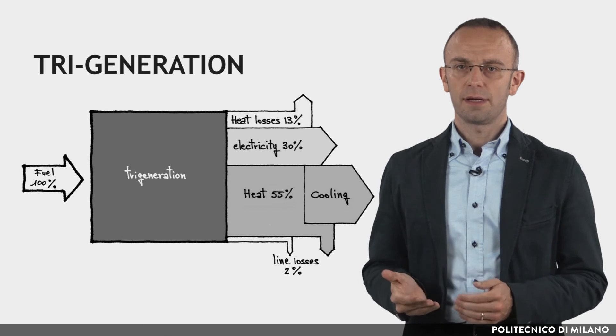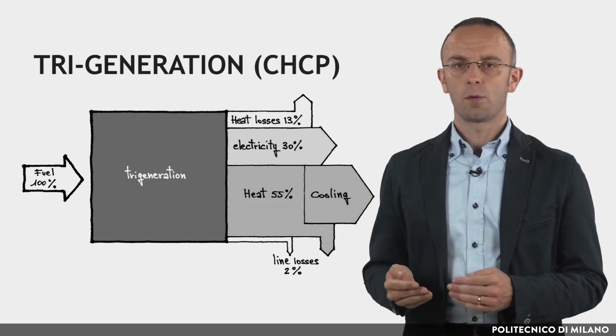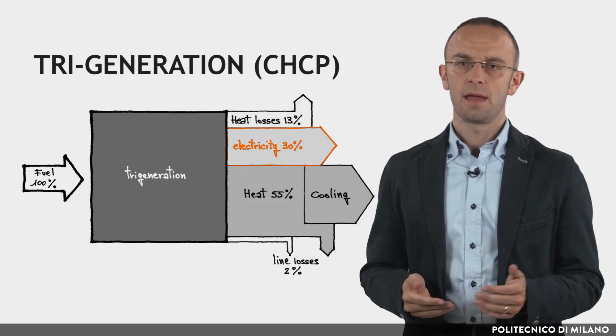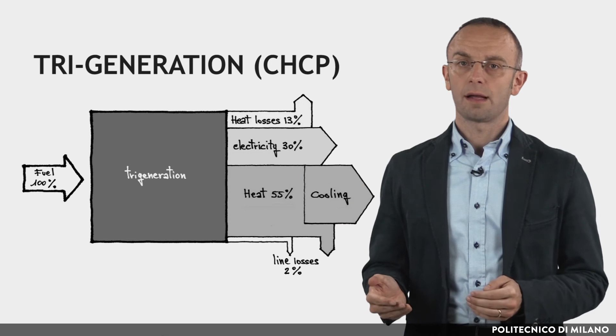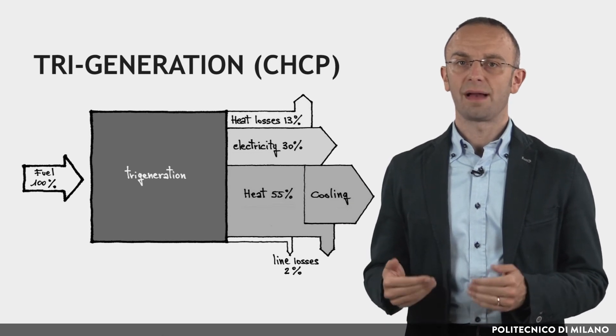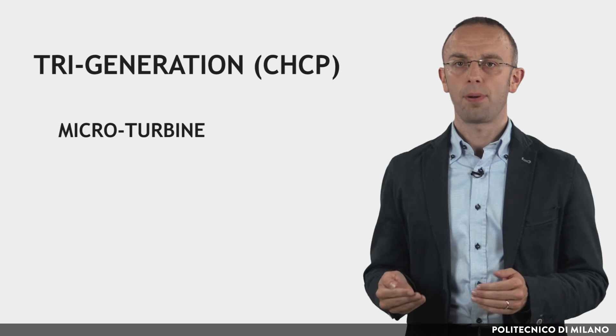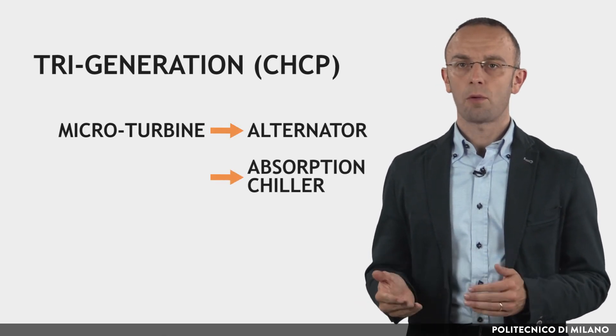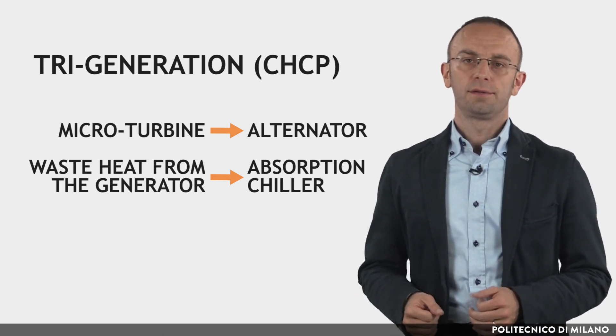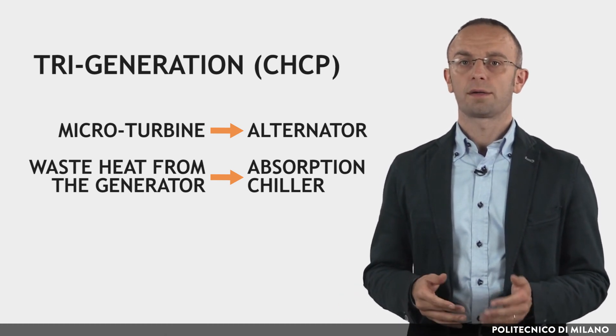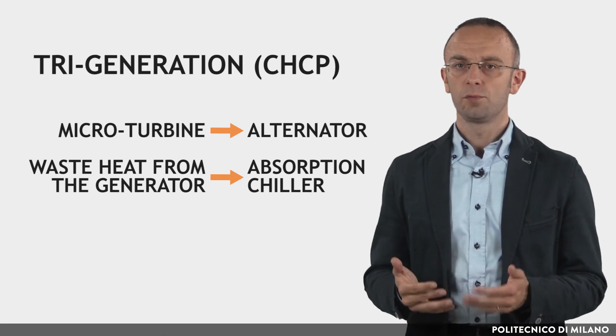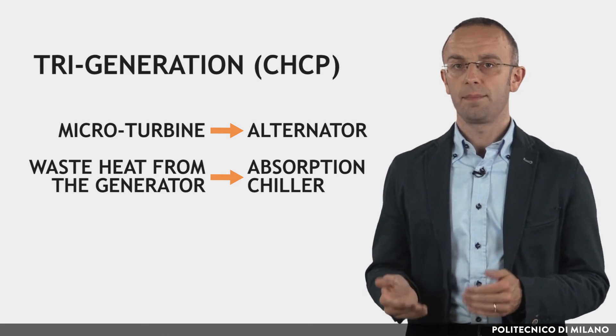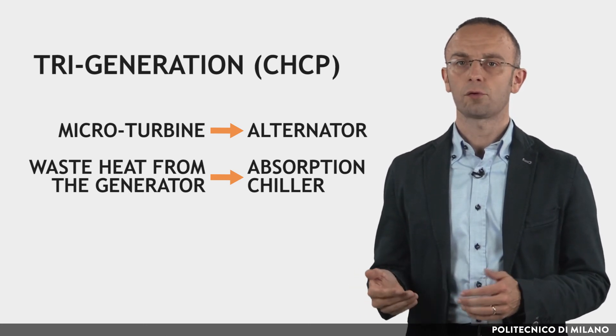With regard to tri-generation or combined heat, cooling and power, it refers to the simultaneous generation of electricity and cooling. The most common technical configuration is made up of a reciprocating engine or a microturbine powering an alternator and an absorption chiller, which is powered by the waste heat from the generator. This system can be interesting where there is a constant need of thermal energy that can be used both for cooling and for producing domestic hot water, and where availability of electricity from the grid is not always guaranteed.